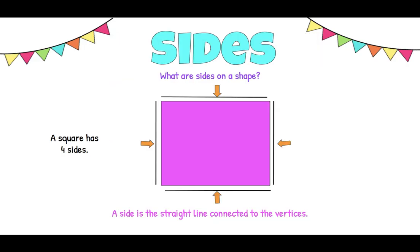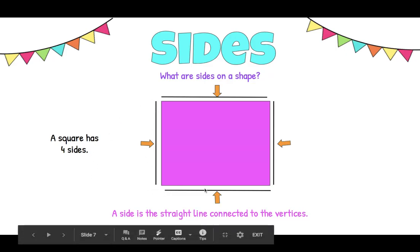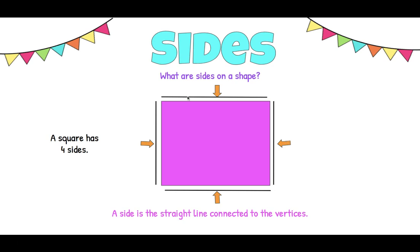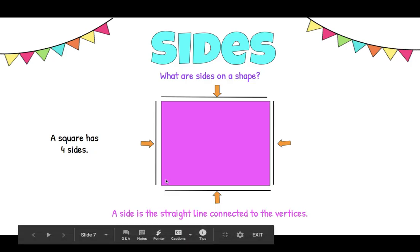Now when we're talking about sides of a shape, those are the straight lines. So this is a side, this is a side, this is a side, and this is a side. So a square has four sides. It's those straight lines that are connecting the vertices.